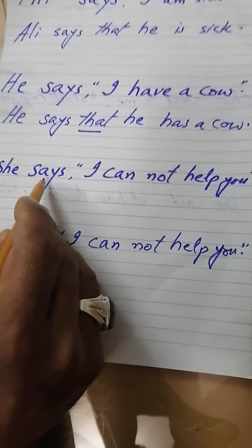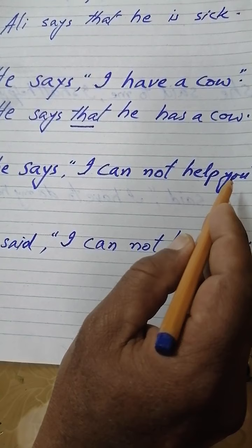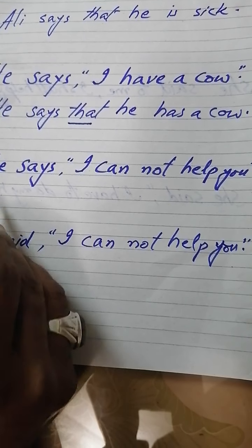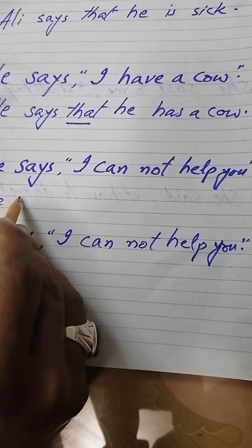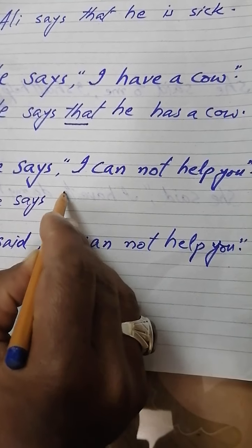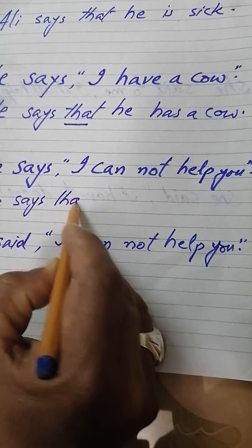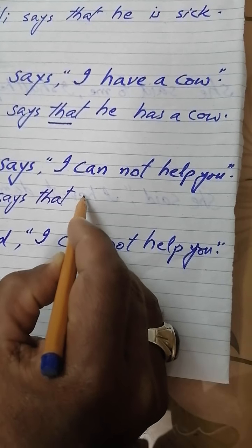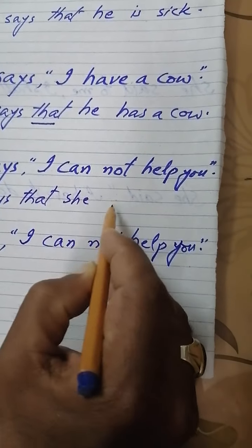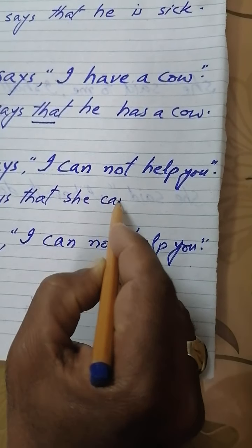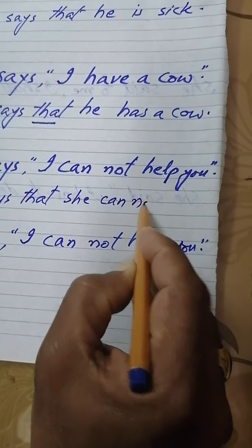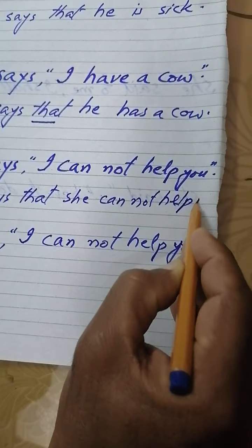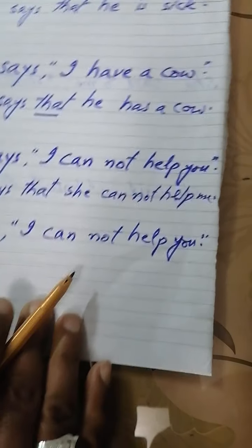Next sentence: 'She says I cannot help you.' Its indirect narration is: she says that she cannot help me.